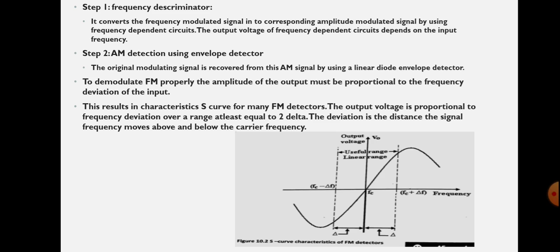Step one — frequency discriminator: the frequency discriminator converts the frequency modulated signal into the corresponding amplitude modulated signal by using a frequency dependent circuit. The output of the frequency dependent circuit depends upon the input frequency. In step two, AM detection is done using the envelope detector. The original modulating signal is recovered from the amplitude modulated signal using a linear diode envelope detector.